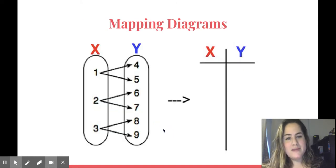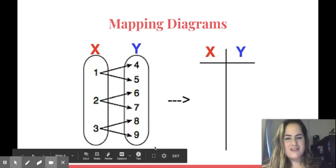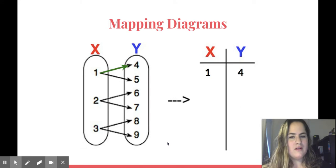If you're given a mapping diagram, this is a funky way to write a table. I'm going to convert this mapping diagram into a table because I'm comfortable with those. Here's how this works. X is on the left. Y is on the right. I can see that one goes with four, but one also goes with five. So that's how I would write it in a table.